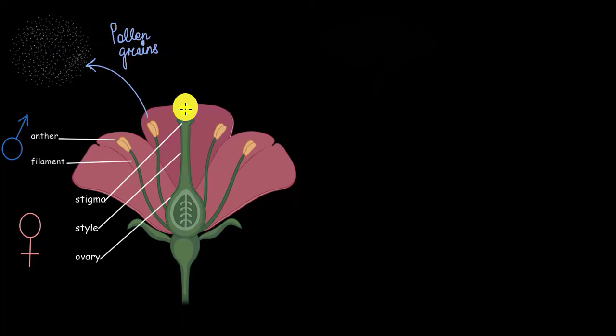This yellow pollen grain actually acts like a bag that holds the male gametes. Now, can you recall how many male gametes a pollen grain contains? Well, each pollen grain will have two male gametes and both the male gametes will be haploid.